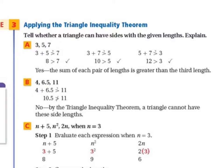Example 3A: can sides of lengths 3, 5, and 7 form a triangle? Adding all pairs: 3 plus 5 is 8, which is greater than 7. 3 plus 7 is 10, greater than 5. 5 plus 7 is 12, greater than 3. Because all three pairs work, this can form a triangle.